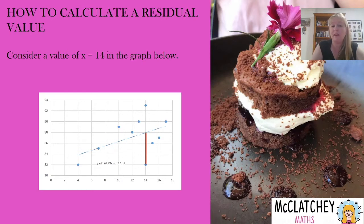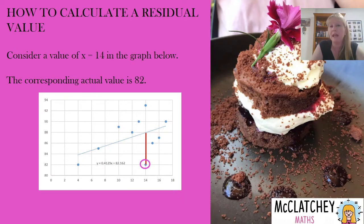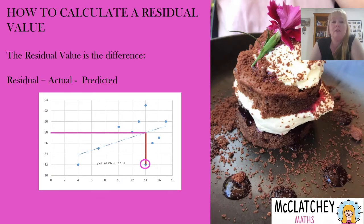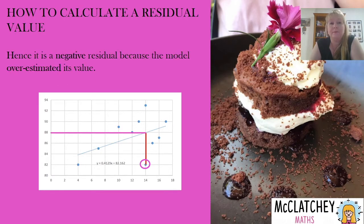Let's have a look at this graph. We've got a point where x equals 14, and when that data was taken in real life, the actual corresponding value for the y axis was 82. Now if we use the graph to calculate the residual, we can see that what our model predicted for that y value was 88. So the residual equals the actual value of 82 minus the predicted value of 88, giving a residual value of negative 6. That is a negative residual value, which means our model in this case overestimated the value.